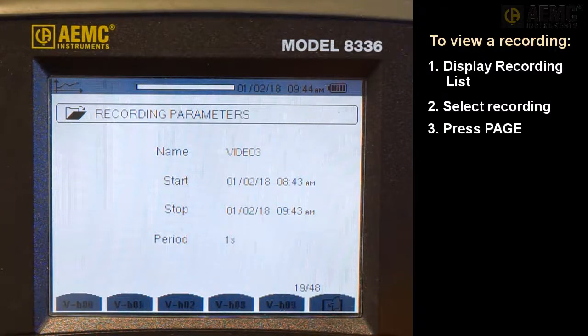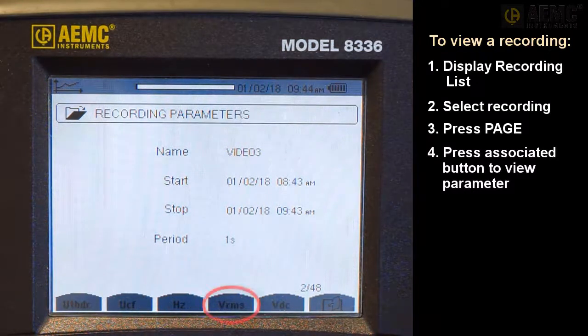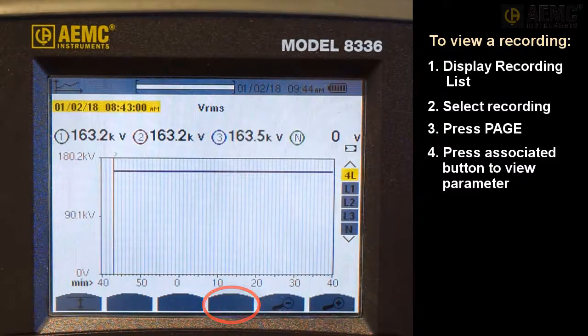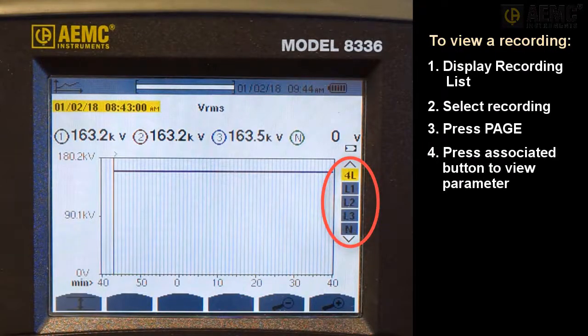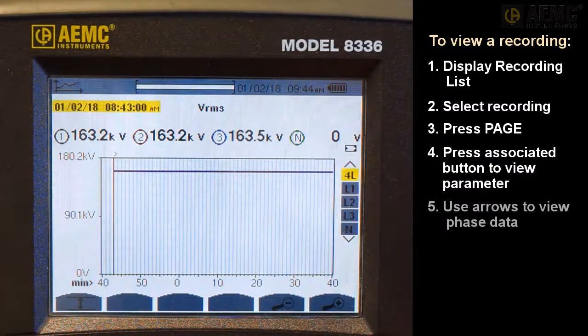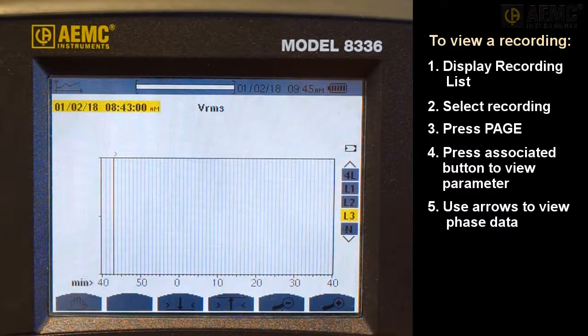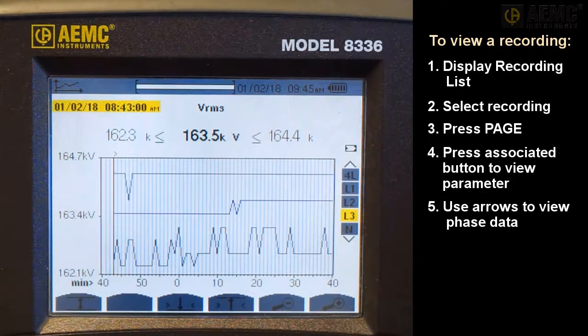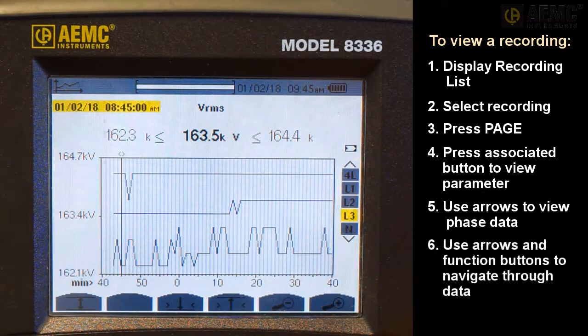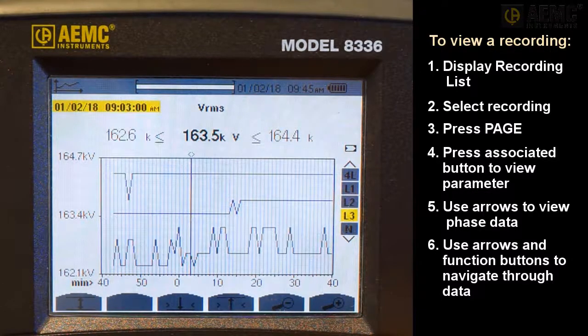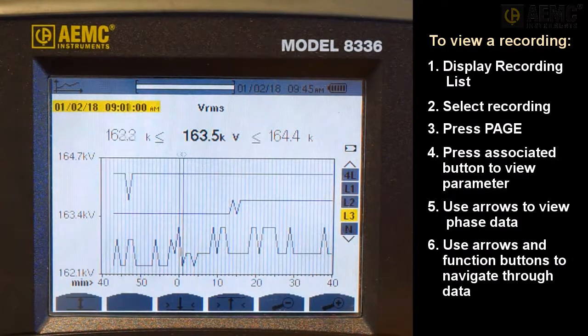To view a parameter, press its Function button. For example, to view voltage root mean squared data, press VRMS. At the top of the screen are the RMS values for the phase inputs. On the right is a column listing the phases. By default, all phase data is shown in a single display. Use the up and down buttons to view data for individual phases. The center of the screen shows the data graphically. Pressing the left and right buttons moves the cursor to different times within the graph. As you do this, the minimum, average, and maximum measurement values at the top of the screen refresh.